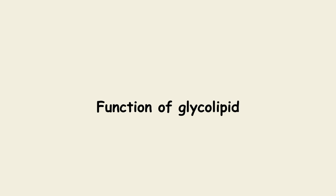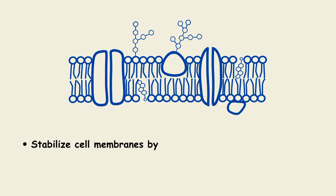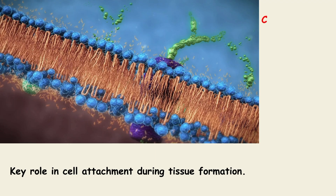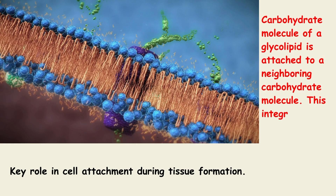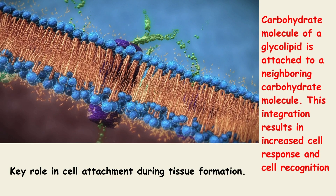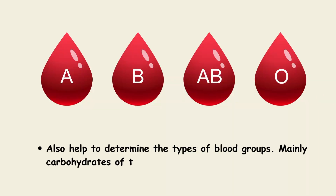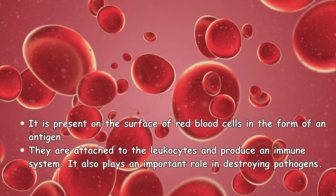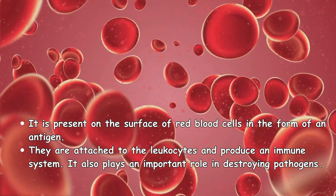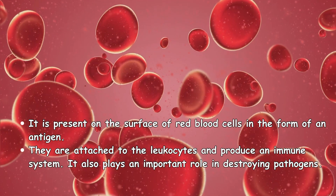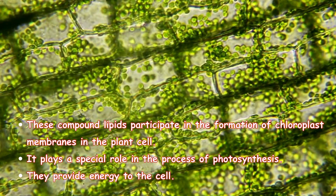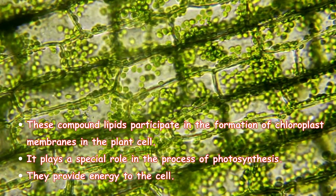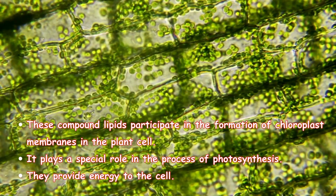Now let us see the functions of glycolipids. Glycolipids help in stabilizing the cell membrane by forming hydrogen bonds with the surrounding water molecules. The carbohydrate molecule of a glycolipid is attached to a neighboring carbohydrate molecule, and this integration results in increased cell response and cell recognition. It also helps in the determination of the type of blood groups. Glycolipids are also present on the surface of red blood cells in the form of an antigen. They are attached to the leukocyte and produce an immune response. It also plays an important role in defense mechanism. These compound lipids participate in the formation of chloroplast membrane in the plant cell, and also play a special role in the process of photosynthesis. Along with this, glycolipids also provide energy to the cells.